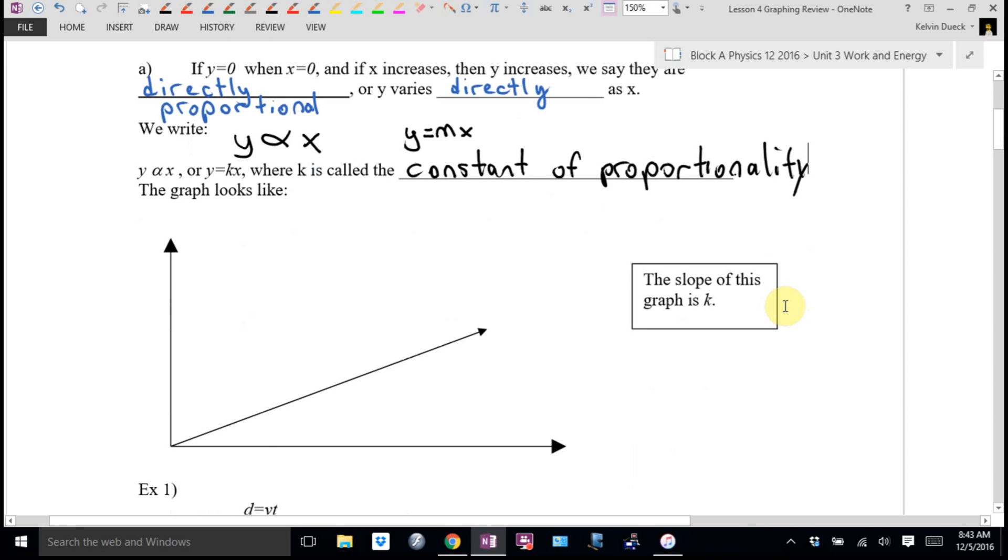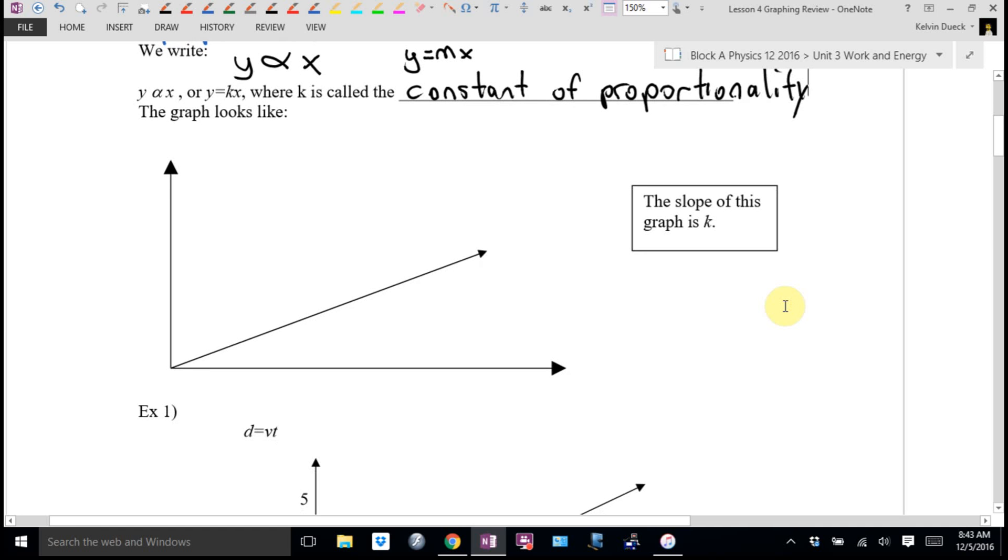In other words, if you see a graph that looks like this, it goes through zero, zero, and it has a positive slope. The slope of this graph is the constant of proportionality. Let me give you an example.